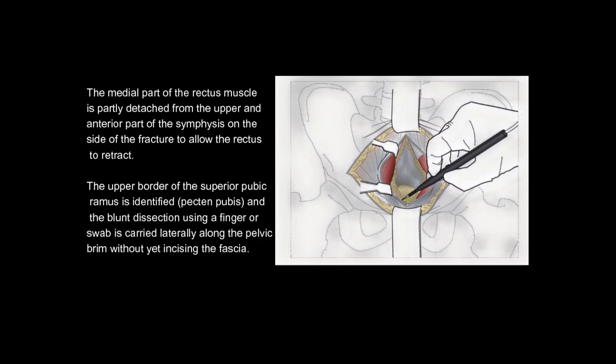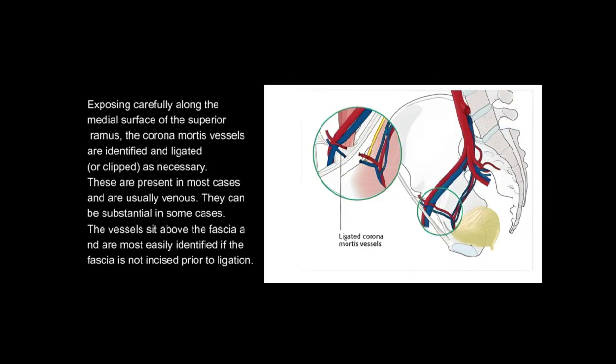The upper border of the superior pubic ramus — the pecten pubis — is identified, and blunt dissection using a finger or swab is carried laterally along the pelvic brim without yet incising the fascia. Exposing carefully along the medial surface of the superior ramus, the corona mortis vessels are identified and ligated or clipped as necessary. These are present in most cases and are usually venous, though they can be substantial in some cases.